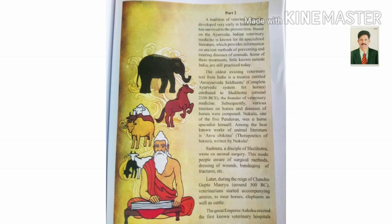Subsequently, various treatises on horses and diseases of horses were composed. Nakula, one of the five Pandavas, was a horse specialist himself. Among the best known works of animal literature is Ashwa Chikitsa, or Therapeutics of Horses. Therapeutics means a branch of medicine dealing with the treatment of diseases. Sushruta, a disciple of Shalihotra, wrote on animal surgery.